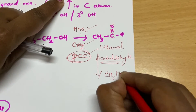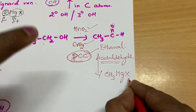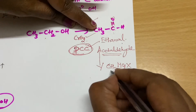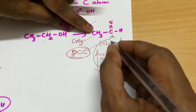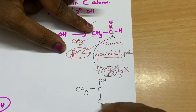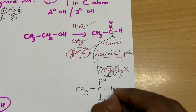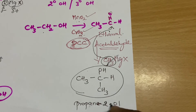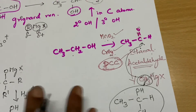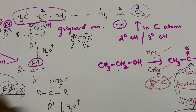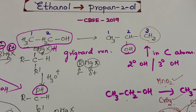Then perform the Grignard reaction. The carbon being added is a methyl group, so use methyl Grignard (CH₃MgX, where X can be chloride, bromide, or iodide). The CH₃ group attaches to the carbonyl carbon of ethanal. Followed by hydrolysis, you get propan-2-ol. So you should be aware that multiple steps could be involved. I hope this video helped you — see you in the next video, thank you.